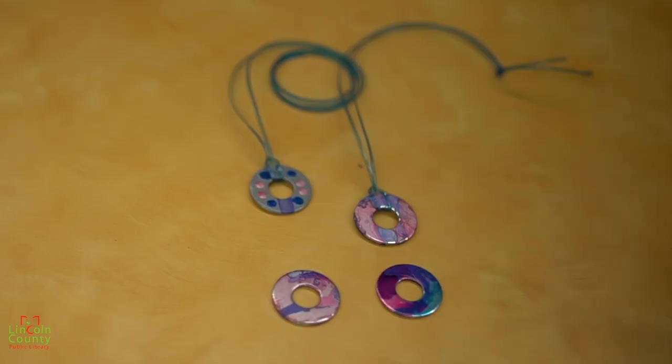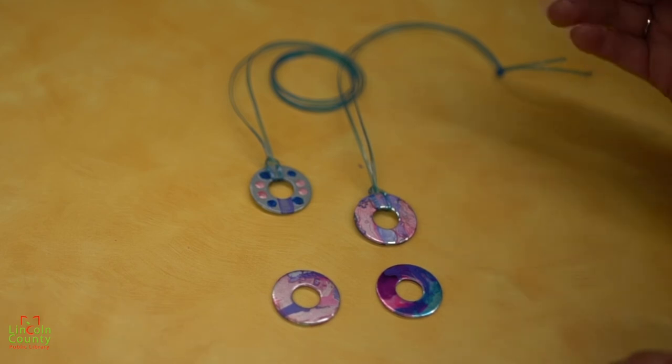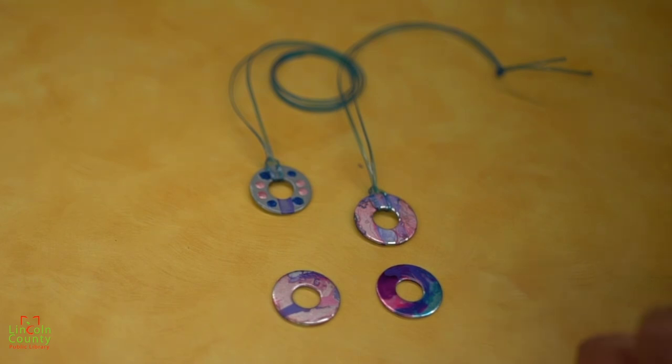You may want to do some sort of sealant like a clear nail polish coat over it and on the back of it as well to prevent cracking in your nail polish. And then when you put the yarn or cord or string on it to make it a necklace you can also add beads going up it for an even more decorative approach.